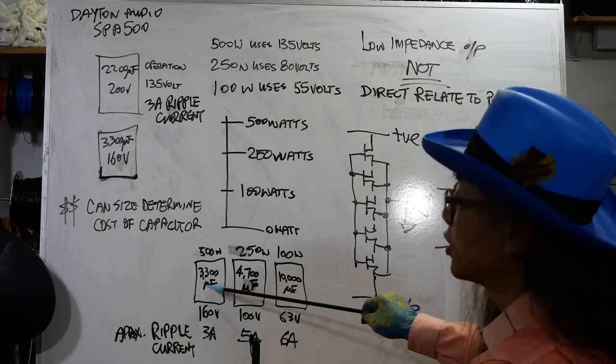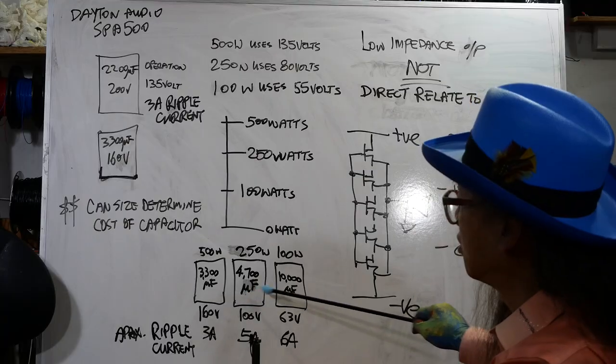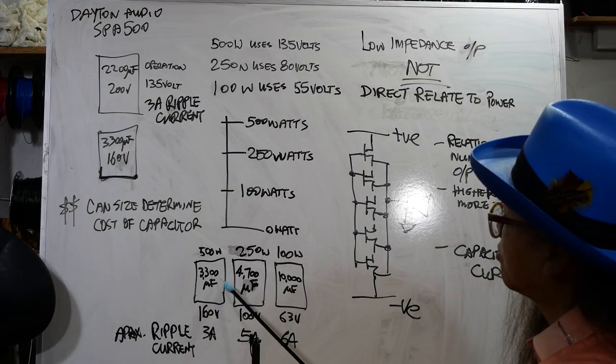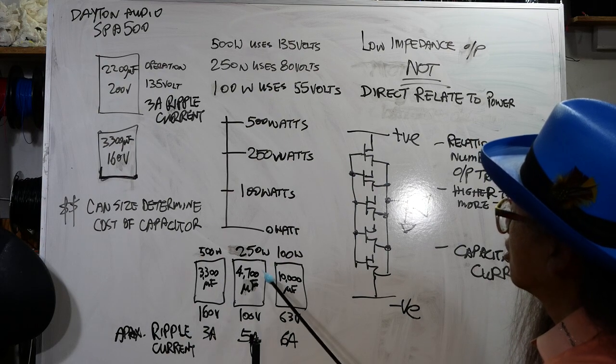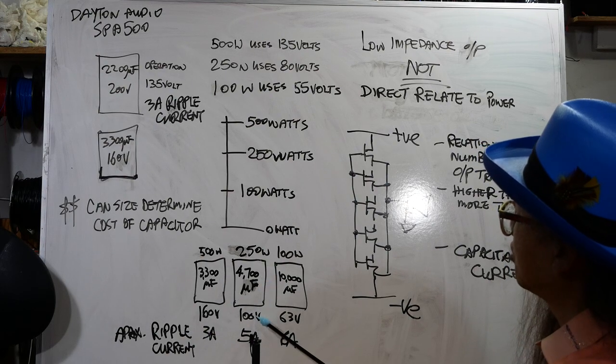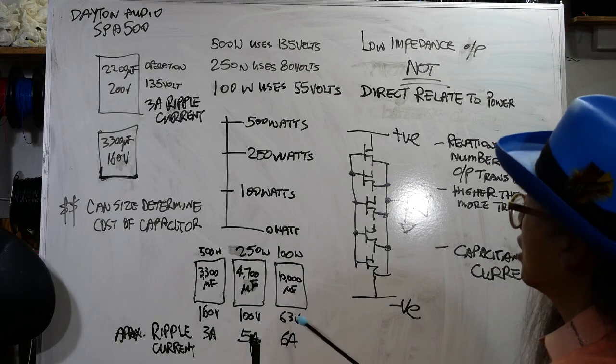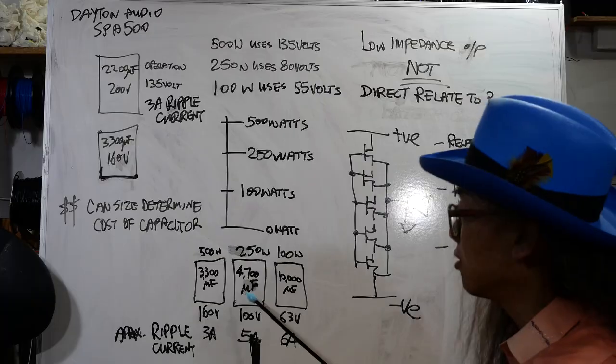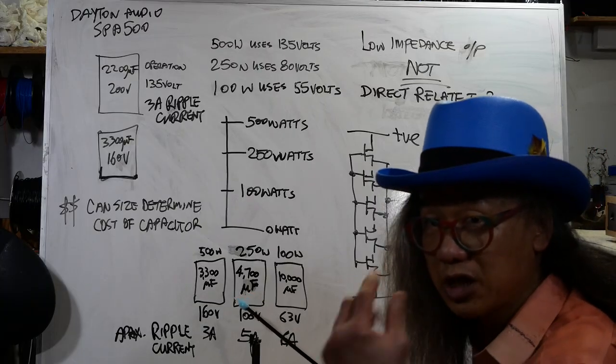For the same given size, this capacitance - 3300 microfarad at 160 volt, 4700 microfarad at 100 volt, and 10,000 microfarad at 63 volt - they are basically the same dimensions, physical dimensions. Therefore, same money.